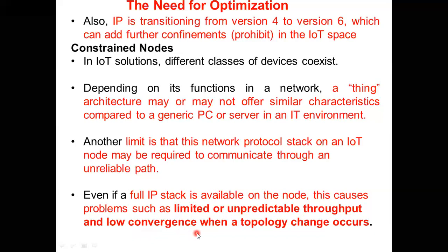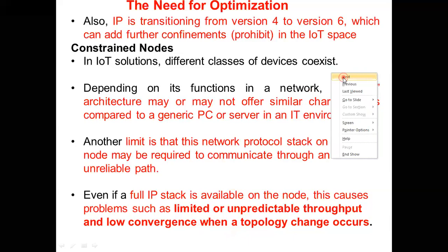Another challenge is low convergence when the topology changes. What topology means here is when a new device connects to the IoT network — for example, there are already 10 devices in the IoT network and an 11th device joins. Every device should know that a new device has come. For all devices to understand this change, it will take a long time compared to a normal network. When something changes, propagating that understanding to everything takes a long time. This makes convergence slow and unreliable.